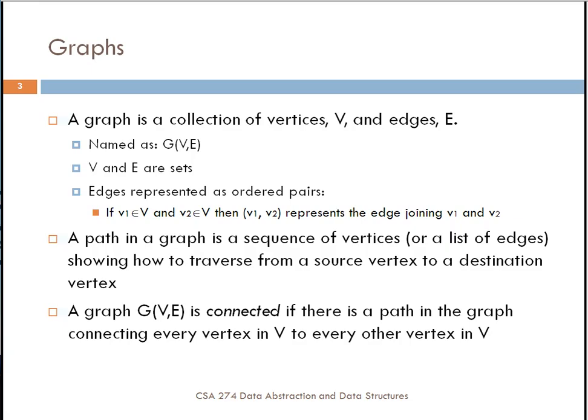A path in the graph is a sequence of vertices or a list of edges, showing how to traverse from a source vertex to a destination vertex. A graph is connected if there's a path connecting every vertex in V to every other vertex in V.